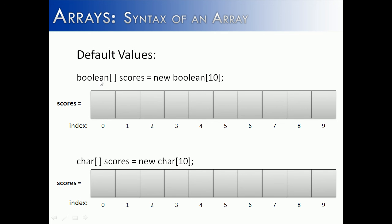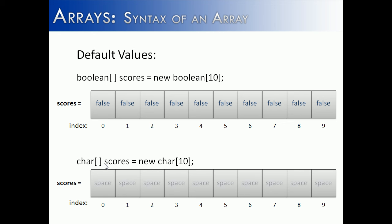The next type is a boolean array. A boolean array with 10 values — the default values are false. If you wanted to make them all true later, you'd have to go into each slot and set them to true, but the default value when a boolean array is constructed is false. The character array is kind of interesting because what it puts inside is a space. If you tried to print out the value inside the array, you would not see anything — you'd have to show something before and after it to prove the space was there.